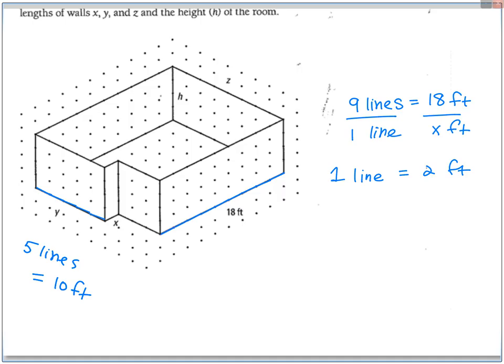And x, I'm not sure if x is just this little one or the big one. The smaller one, which was one line, so x equals two feet. h is one, two, three, four lines. Four times two is eight feet. And z, one, two, three, four, five, six, seven, eight - eight lines, z is 16 feet.